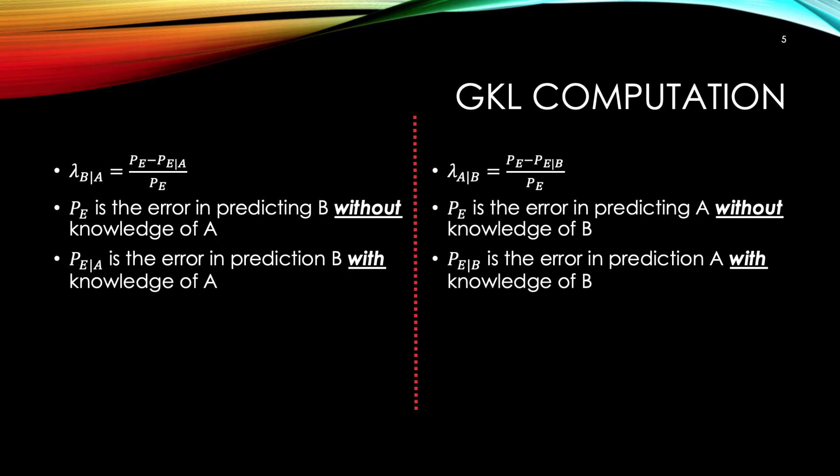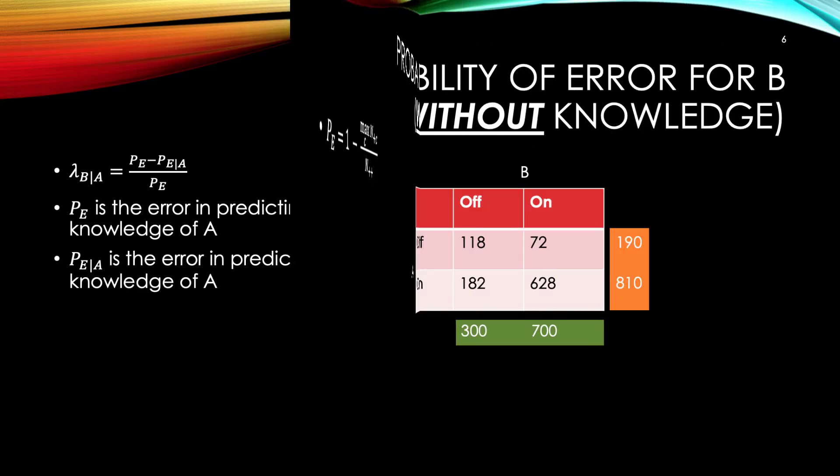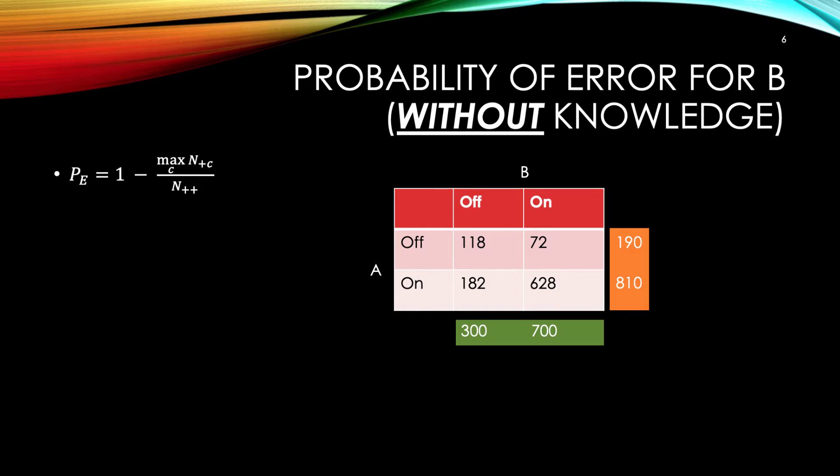Let's take a look at how we can compute P of E and P of E given A. I'm going to try to simply state what P of E is. P of E is 1 minus the maximum of the column marginals over the total number of observations. Let's break down the fraction part. In the numerator, the expression says to go find the largest column marginal and let that be the numerator. The N plus C denotes all rows for a column C. In the denominator, N plus plus denotes summing across all cells or all combinations of rows and columns, which gives us the total number of observations.